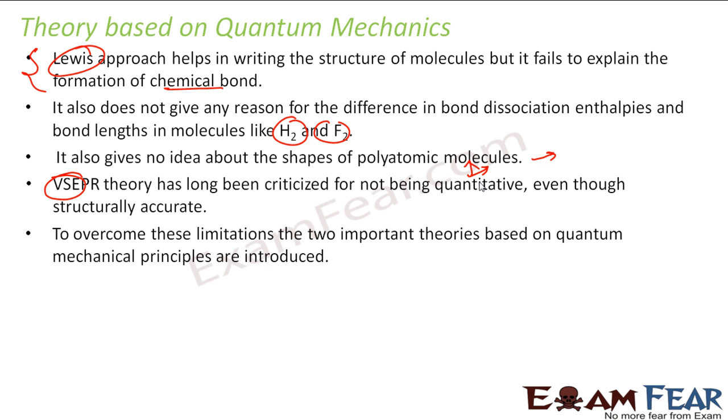To overcome these limitations from experimental ways, they came out with theories based on quantum principles. These theories were valence bond theory and molecular orbital theory.